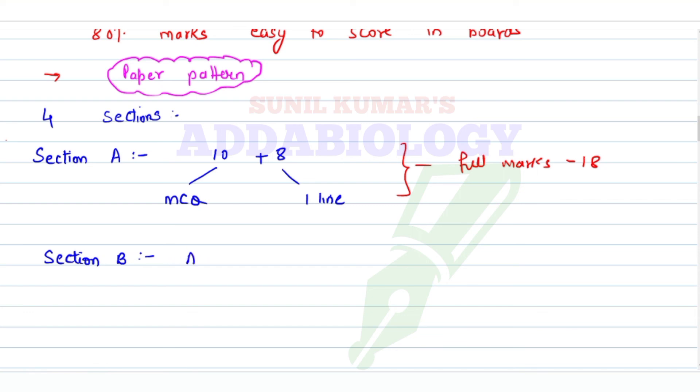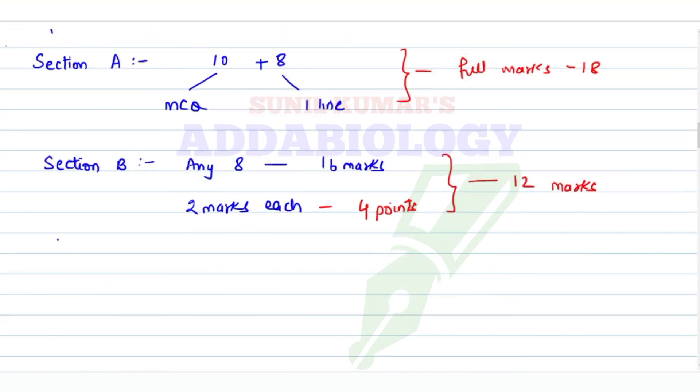Section B is very nice because it gives you lots of options. You have to attempt only 8, which is for 16 marks, 2 marks for each question. How much to write for 2 marks? Minimum 4 points necessary for one answer. Write answers in points, and in Section B try to score at least 12 marks.